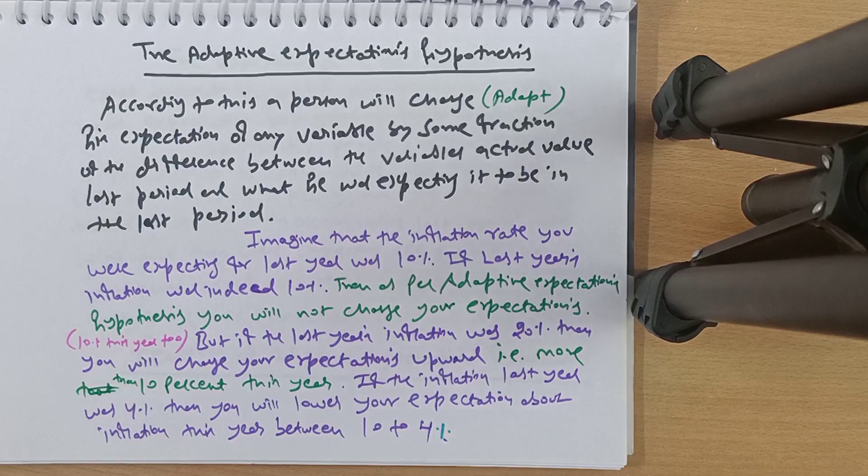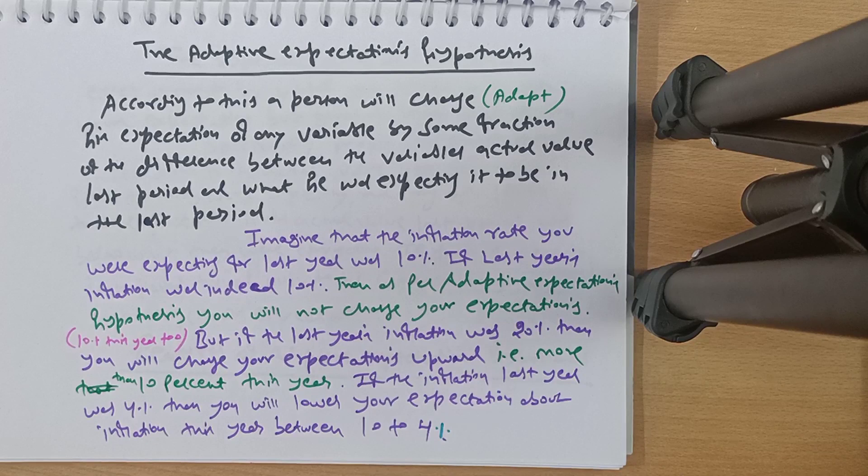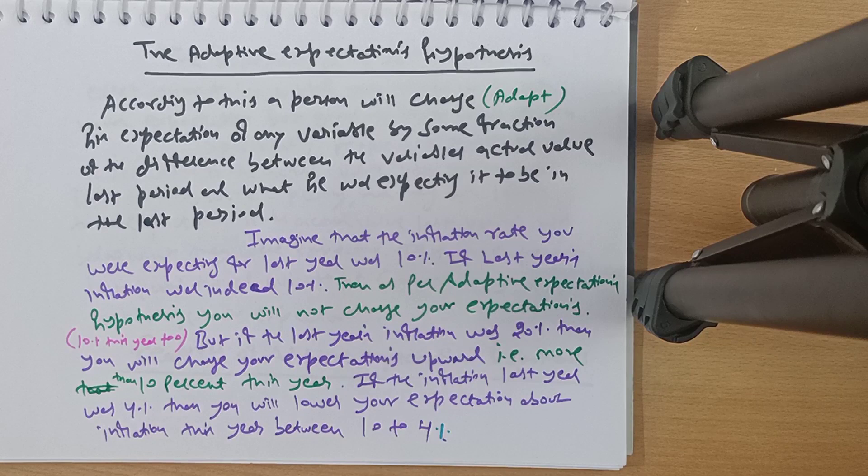The precise method by which workers form their expectations of future prices therefore influences the effect that changes in aggregate spending have on employment. Expectation is very important here. Now, adaptive expectation hypothesis: the name says it all — you adapt based on your experience. Suppose everyone says a movie is very bad, but when you watch it and find it good, your viewpoint changes based on your own experience.